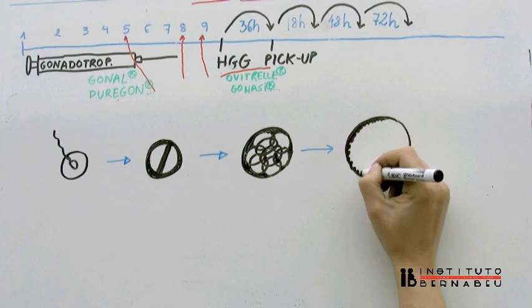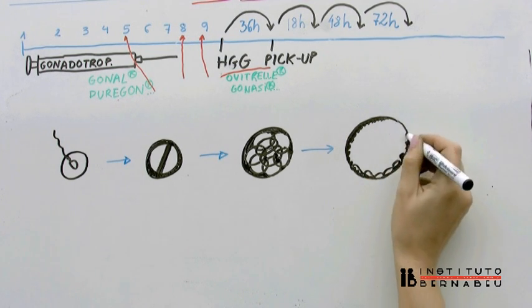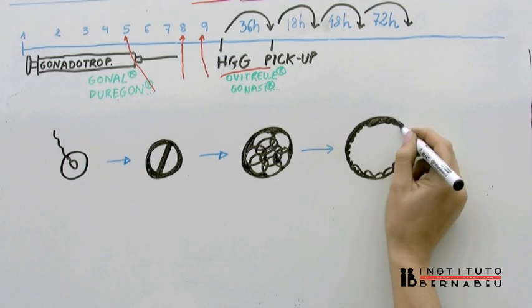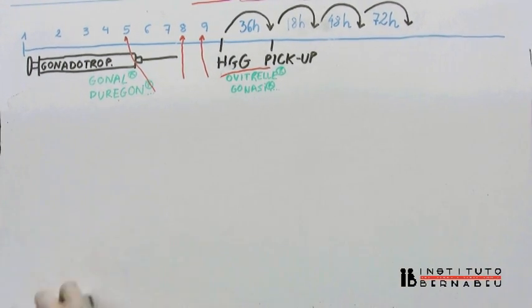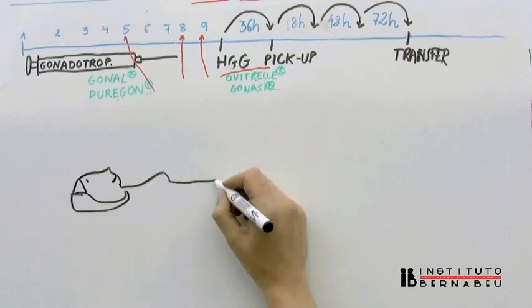From the fourth day, the embryos are called blastocysts. The cells are already compacted and can even be seen moving. The fifth day is the maximum amount of time the embryos can be outside the womb.